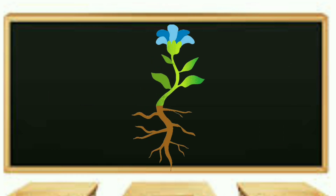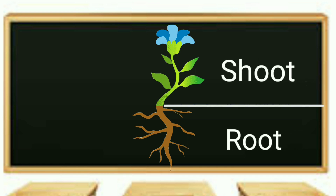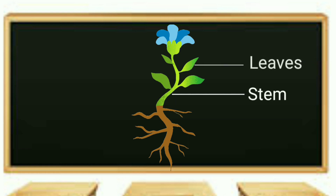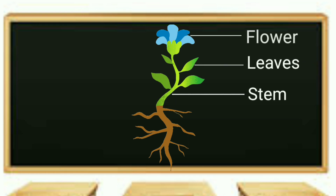The two main parts of the plant are root and shoot. Root usually grows under the ground while shoot usually grows above the ground. Shoot consists of stem, leaves, and flower.